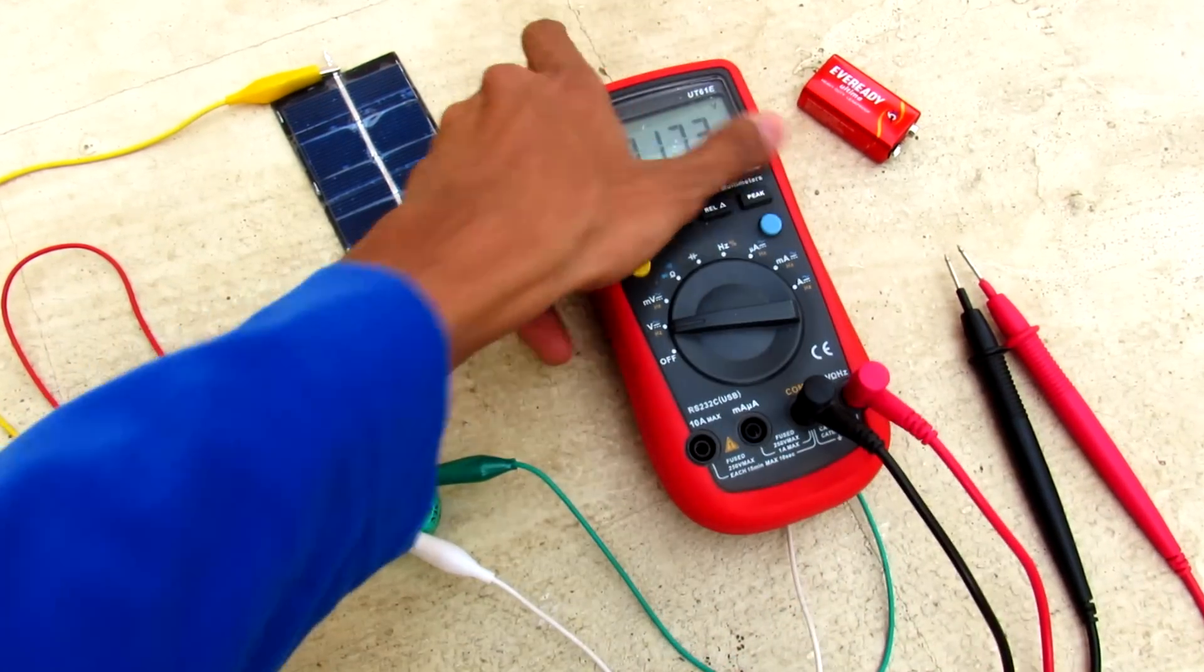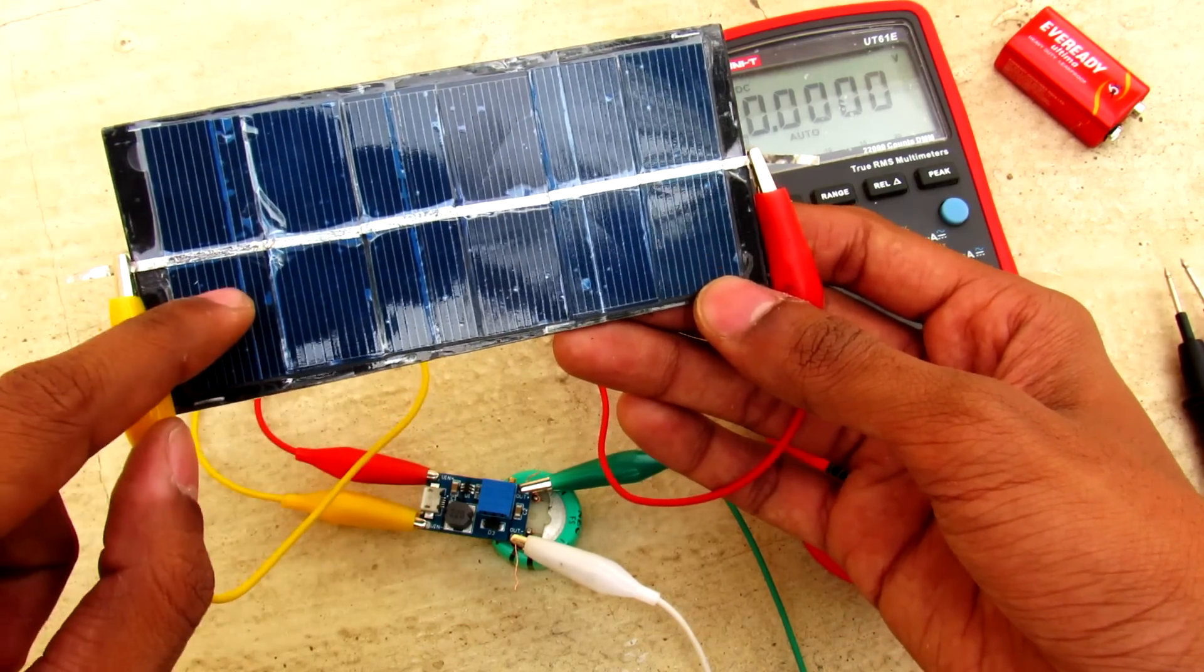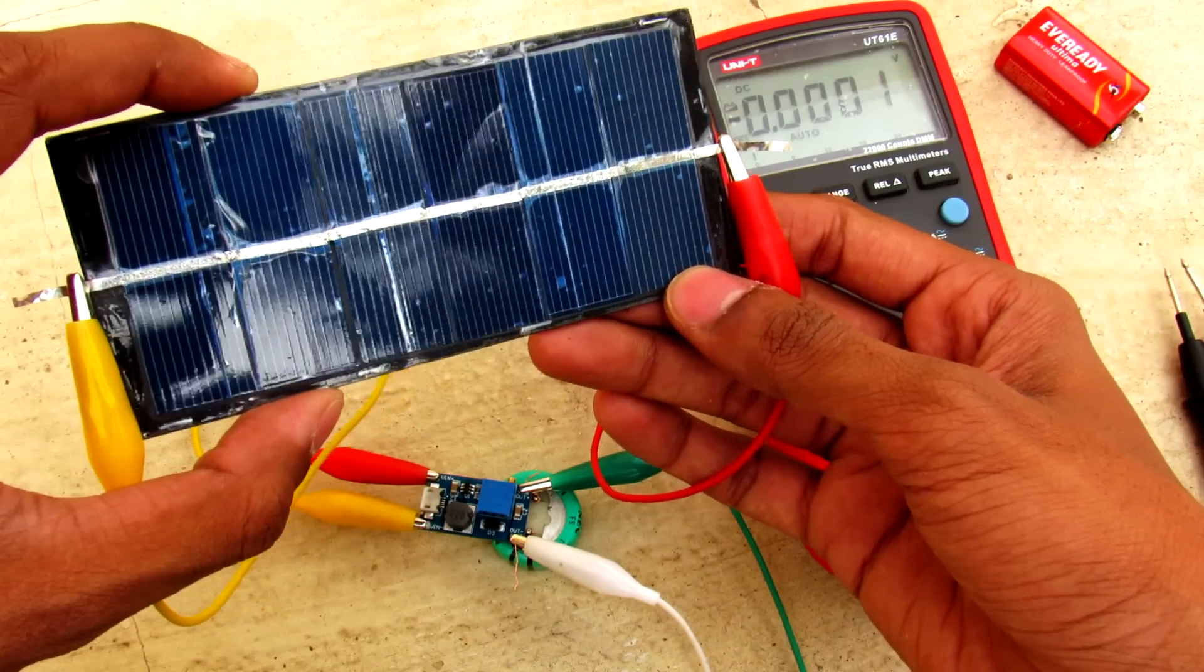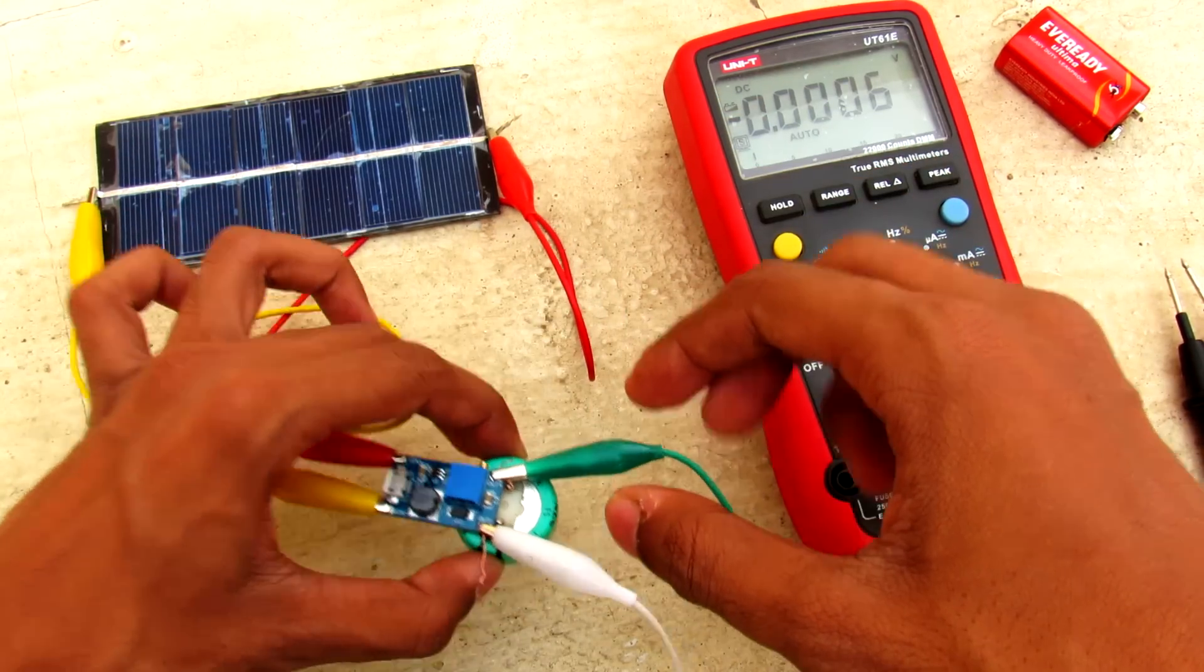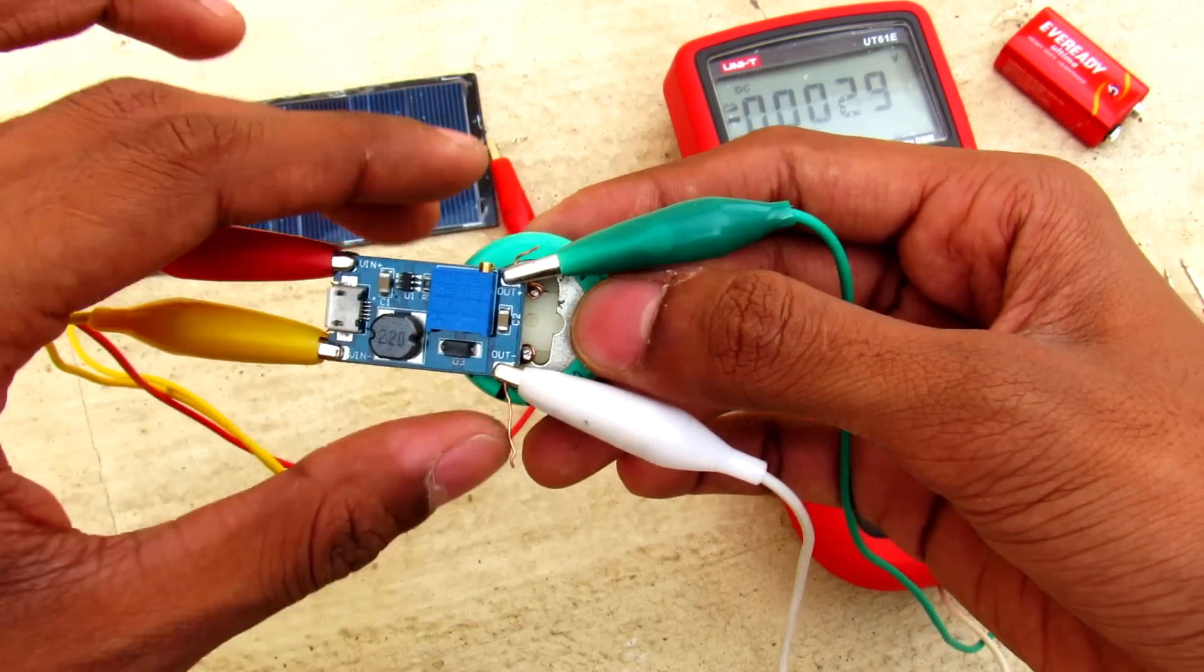So here is the solar panel that I have made. It consists of six solar wafers which will give me 3.6 volts at 200 milliamps maximum. And here I have connected a DC to DC boost regulator and here is the 5.5 volt 1 farad super capacitor.